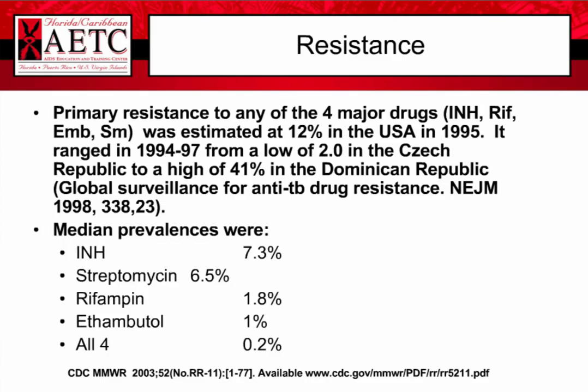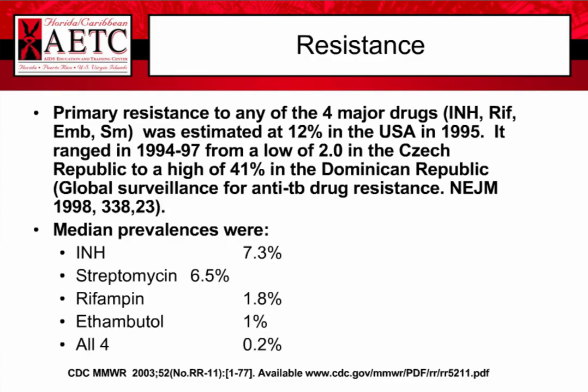The highest resistance in the community is to INH, since it is used for latent tuberculosis prevention, followed by streptomycin at 6.5%, rifampin at 1.8%, and ethambutol at 1%. Resistance to all four drugs is about 0.2%. For pan-sensitive patients, there is more than 95% — in Florida nearly 99% — chance of cure. Resistance to INH gives about 90% cure; rifampin resistance about 70%; MDR-TB (INH plus rifampin resistance) about 50%.